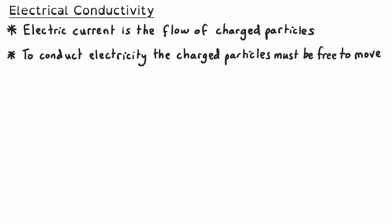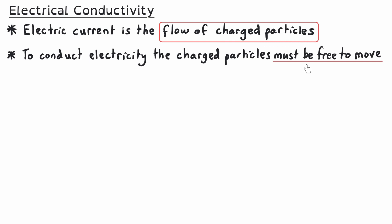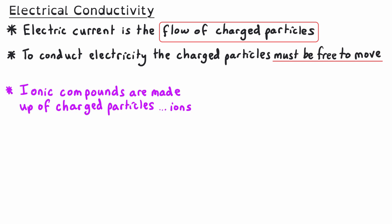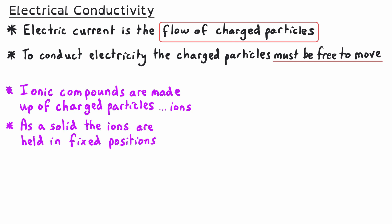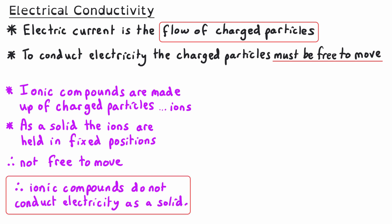Electric current is the flow of charged particles. To conduct electricity, the charged particles must be free to move. So for a material to be a conductor of electricity, it needs to contain charged particles in its structure, and those charged particles must be free to move. Ionic compounds are made up of charged particles — the positive and negative ions — but as a solid, these ions are held in fixed positions in the three-dimensional giant ionic lattice. Therefore they are not free to move around, only to vibrate about those fixed positions, and so ionic compounds do not conduct electricity as a solid.